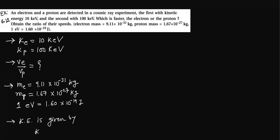K equals one half mv squared. So for electron, KE is given by one half ME VE squared. And for proton, KP equals one half MP VP squared.